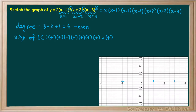Since we know that the degree is even and the sign of the leading coefficient is positive, we know that the graph of this polynomial will open up. In other words, it'll start up and end up.